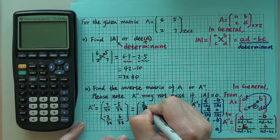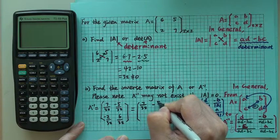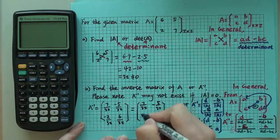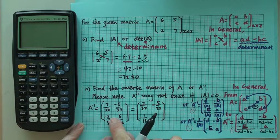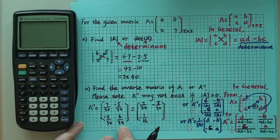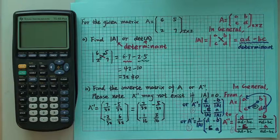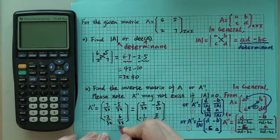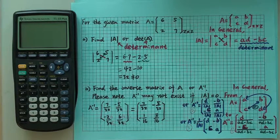And then the first one is 7 over 32, you can write like that. The second one is negative 5 over 32. Now we can still reduce it. This becomes 1 over 16 if both numerator and denominator are divided by 2. This one can also be reduced, that's 3 over 16 if both numerator and denominator are divided by 2. So we'll get that. That would be the inverse, very easy.